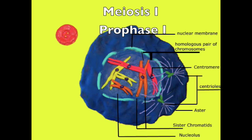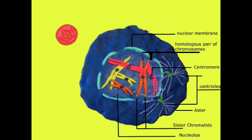Meiosis I begins with prophase I. In prophase I, the cell is a diploid, meaning that there is more than one set of chromosomes. Duplicated chromosomes become condensed into homologous pairs which then form tetrads.